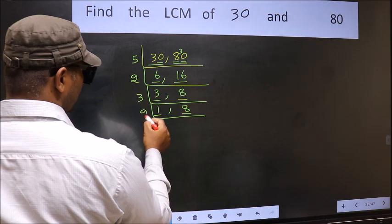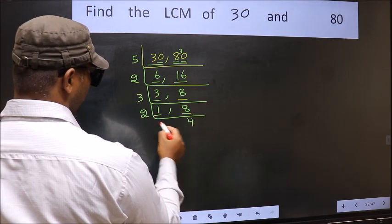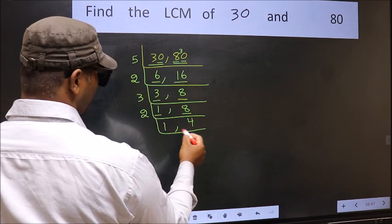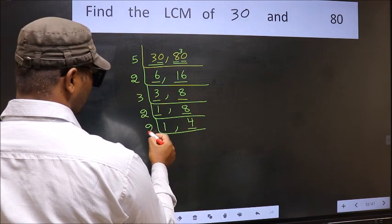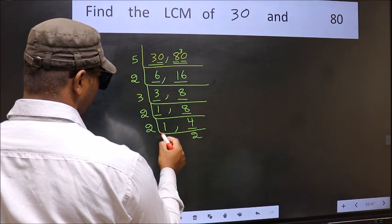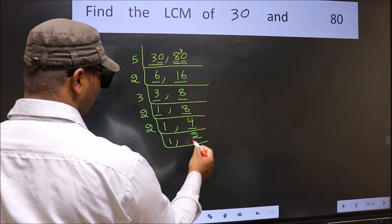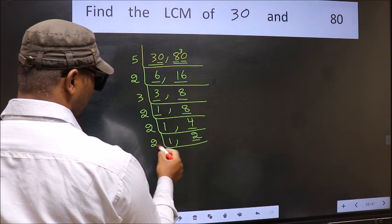8 is 2 times 4 is 8. Now we have 4. 4 is 2 times 2 is 4. Now we have 2. 2 is a prime number, so 2 times 1 is 2.